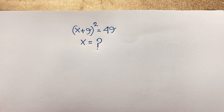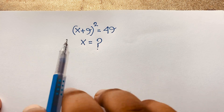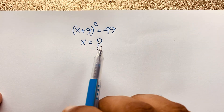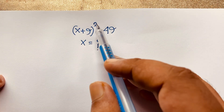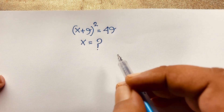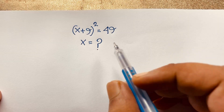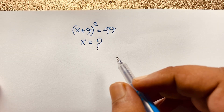Hello everyone, welcome to my YouTube channel. Today we will solve an interesting math problem. It is an easy math solving equation: (x + 9) whole to the power of 2 is equal to 49. x is equal to what? How to solve this interesting math question?